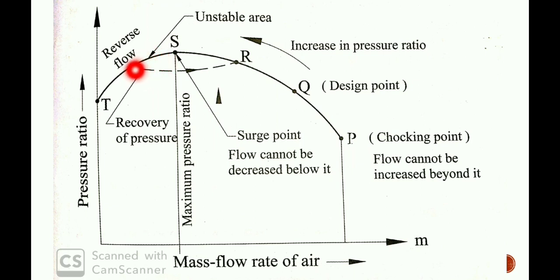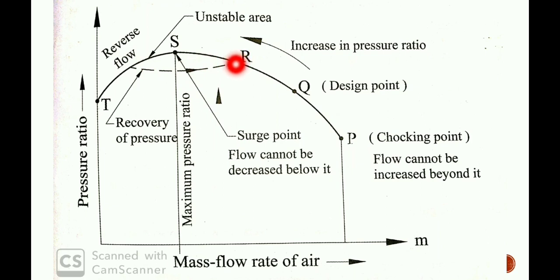Due to this backflow, accumulation in the receiver tank decreases. The compressor then starts to deliver air again. This cyclic process — backflow, pressure drop in receiver tank, compressor delivers again — is the instability of the compressor known as surging.